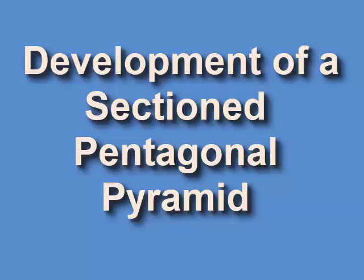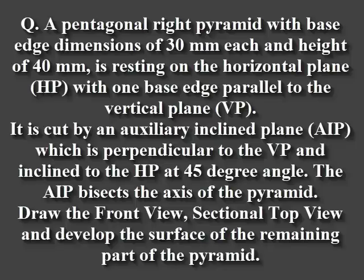In this video we will learn how to section a pentagonal pyramid and then how to develop the surfaces. The question is a pentagonal right pyramid with base edge dimensions of 30 mm each and height of 40 mm, resting on the horizontal plane with one base edge parallel to the vertical plane. It is cut by an auxiliary inclined plane which is perpendicular to the VP and inclined to the HP at 45 degrees. The auxiliary inclined plane bisects the axis of the pyramid. Draw the front view, sectional top view, and develop the surface of the remaining parts of the pyramid.